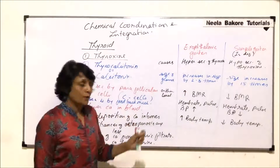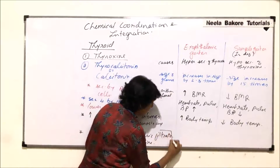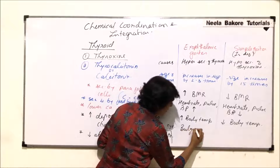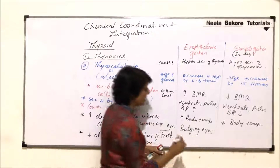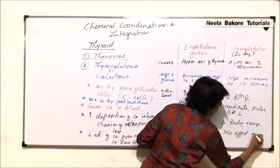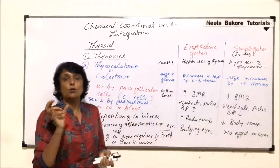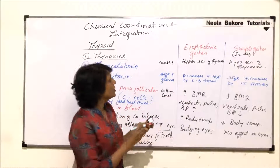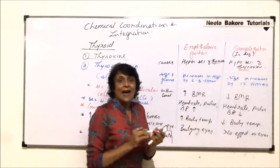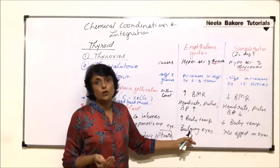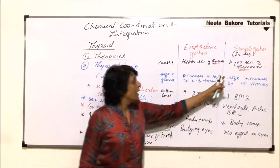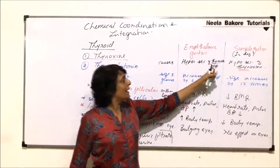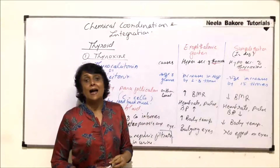One more comparison between the two types of goiters is the effect on eyes. In exophthalmic goiter, the eyes are bulging — hence the name. Whereas in simple goiter, there is no effect on eyes. So one is a hypercondition goiter (excess thyroxine) and the other is a hypocondition goiter (iodine deficiency, less thyroxine), and all these symptoms are directly due to thyroxine levels.